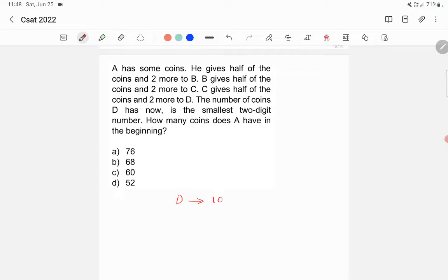How many coins does A have in the beginning? D is 8 plus 2. Why have I written like this? Because C gives half of the coins and two more to D. So this is the two more, and 8 is half of what C has. So how much does C have? C has 16. So C gives half of 16, that is 8, and two more, so 8 plus 2 equals 10 to D.